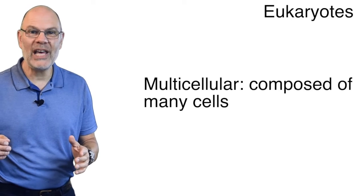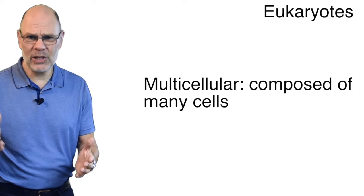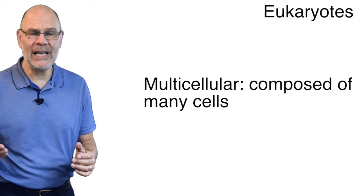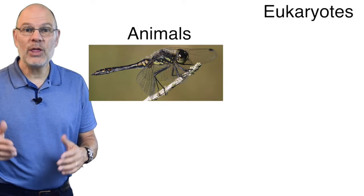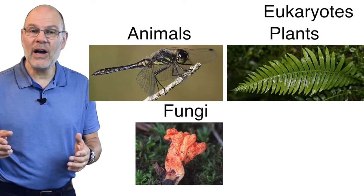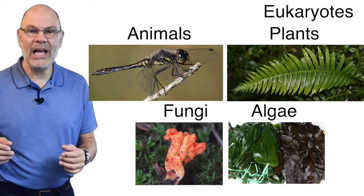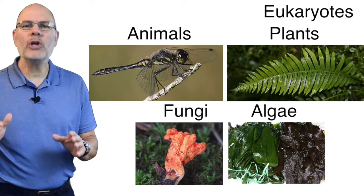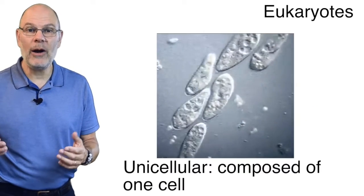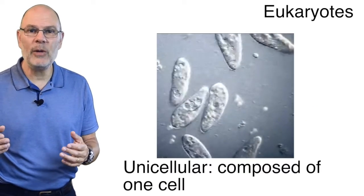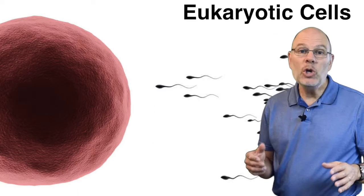The eukaryotes include four well-known groups that are multicellular, which means composed of many cells. These are the animals, the plants, the fungi, and the algae. There are also many unicellular eukaryotes like this paramecium.